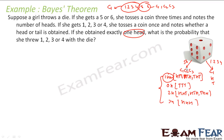I am interested only in exactly 1 head. Through the die, if she gets 5 or 6, these scenarios occur: 1 head, 2 heads, 3 heads, 0 heads. If she gets 1, 2, 3, or 4, she throws a coin once and again gets these scenarios. I am looking only for exactly 1 head now.